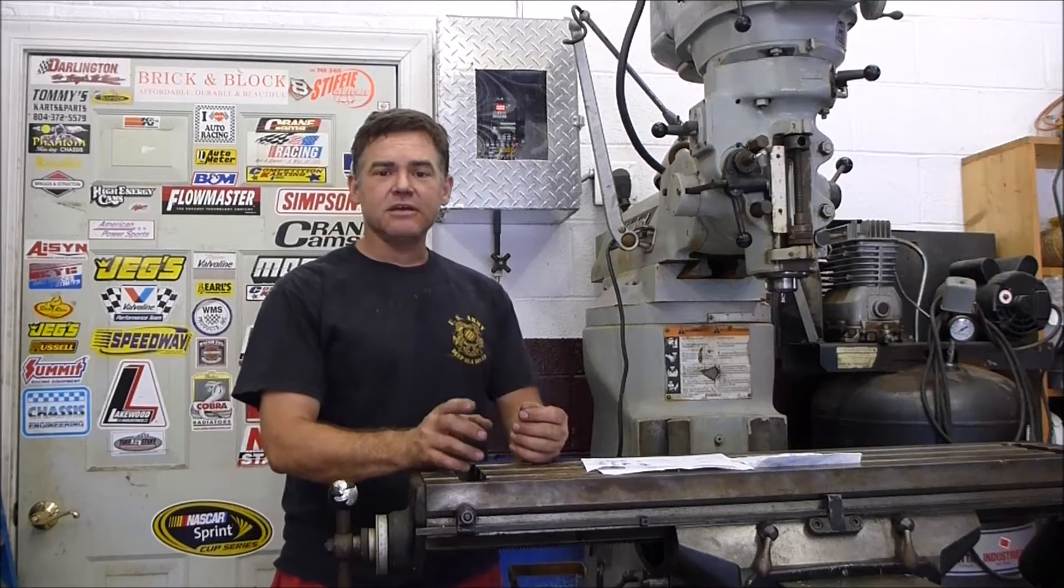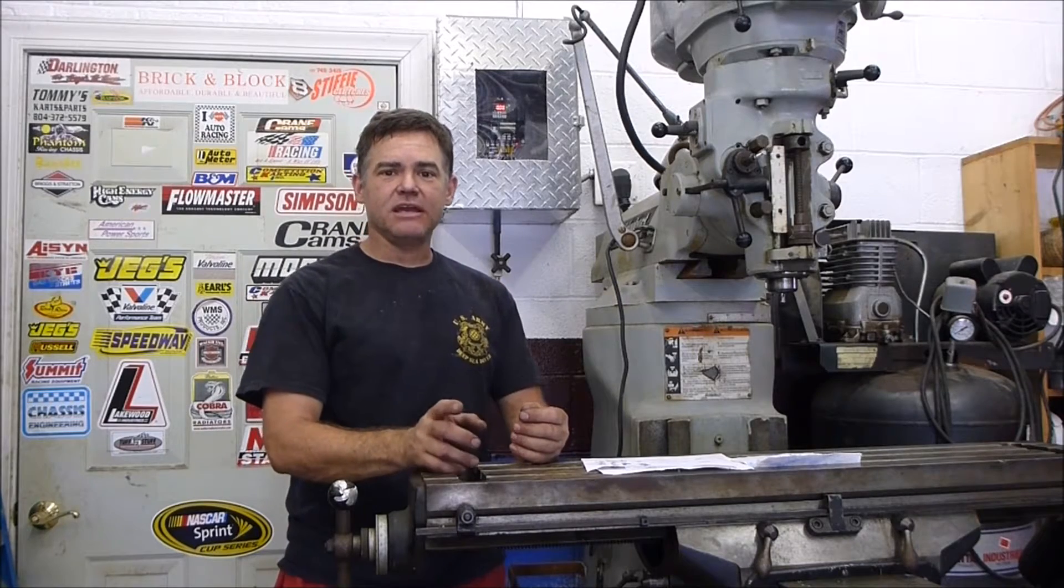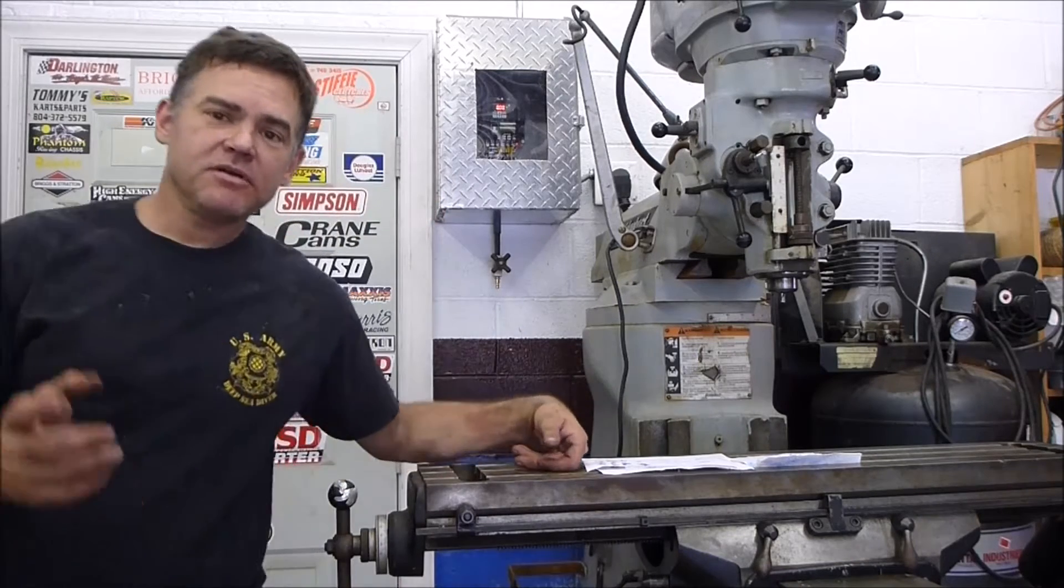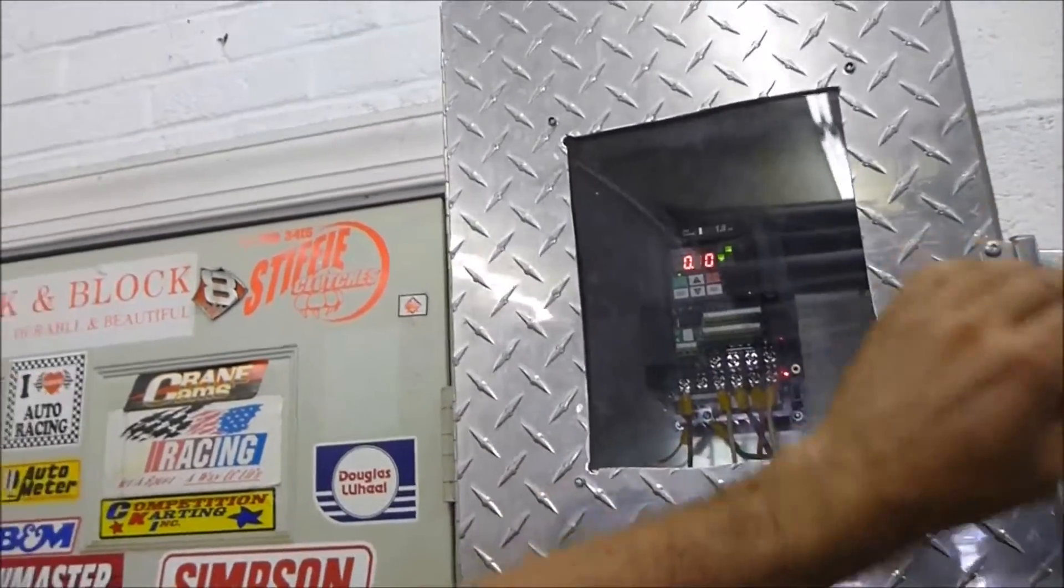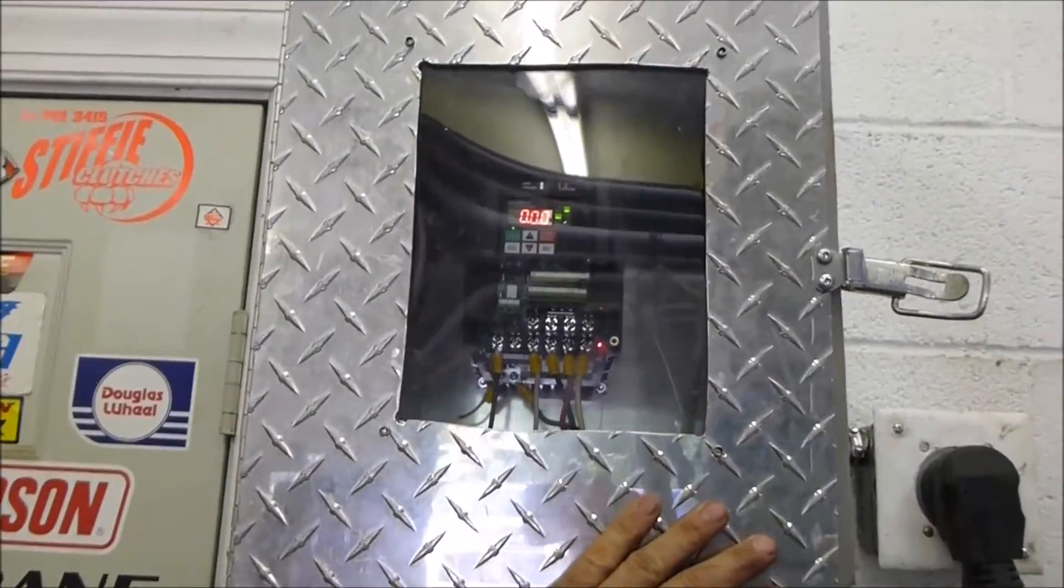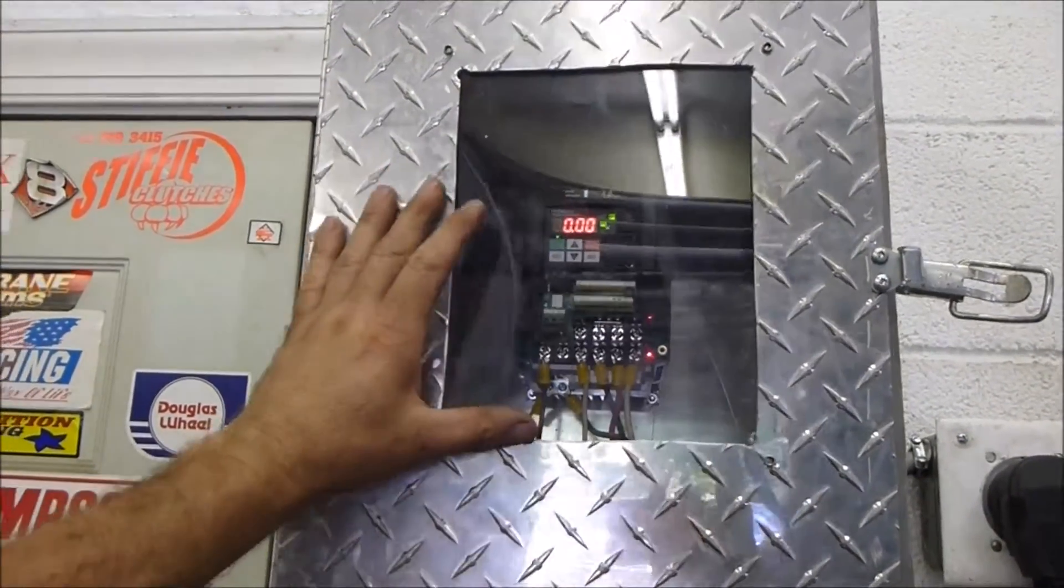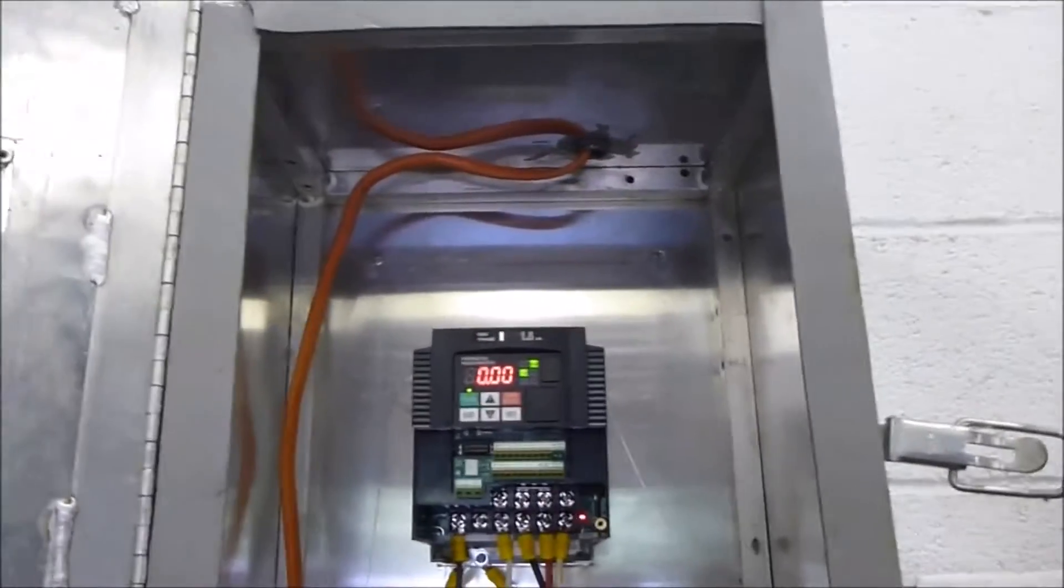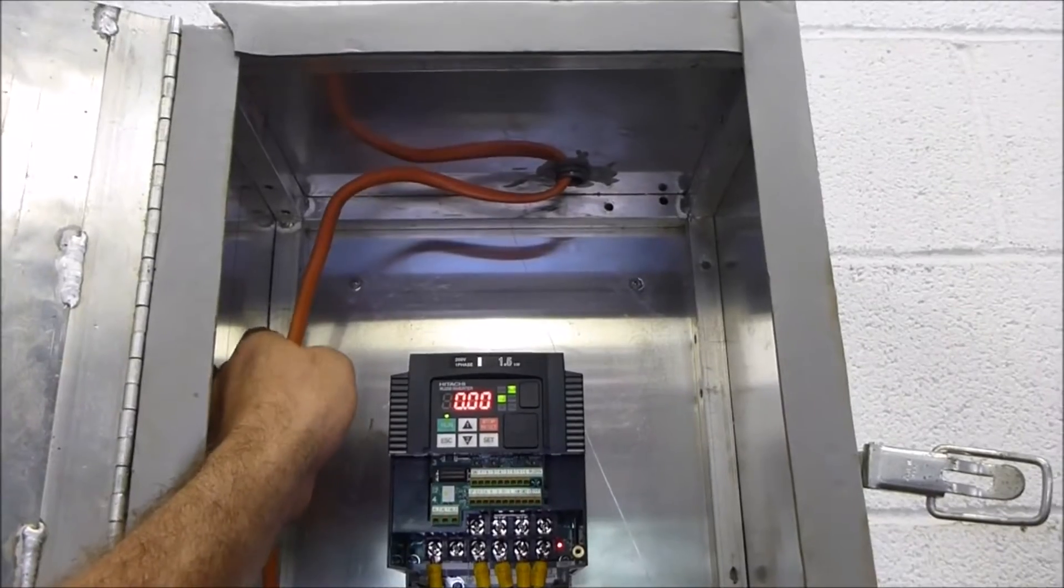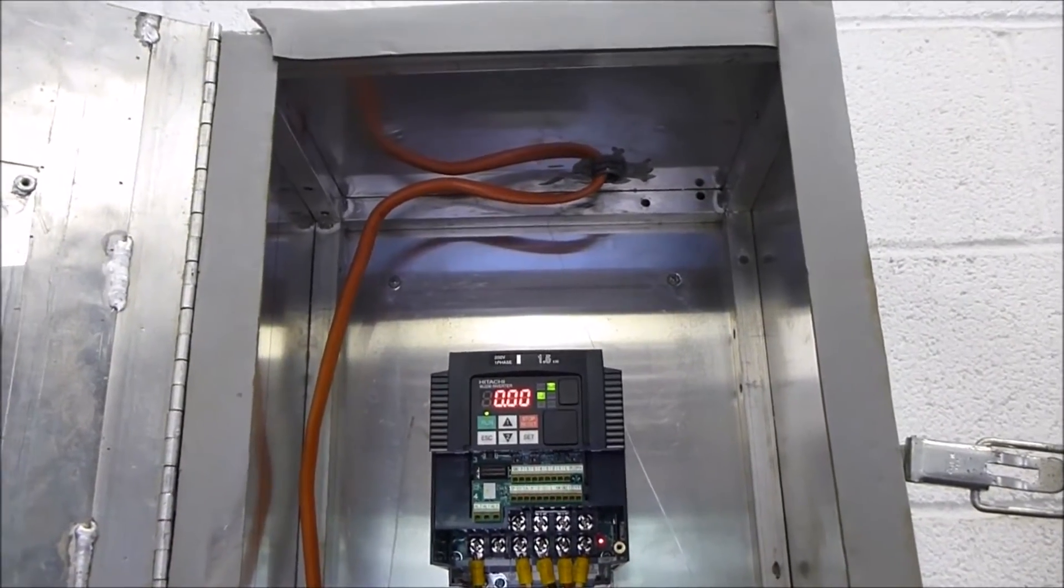In order to connect this together, I went ahead and ran a hard line from my circuit panel. I have a dedicated 30 amp breaker, which I then used for my VFD. I created an enclosure with a see-through screen so that I can look at it and protect it. The line from my dedicated breaker comes through the EMT, ran it over to the VFD.